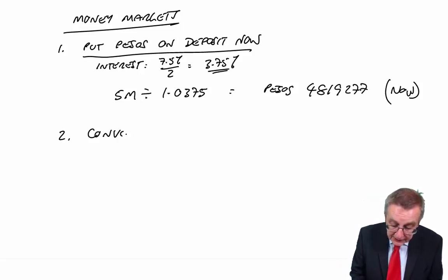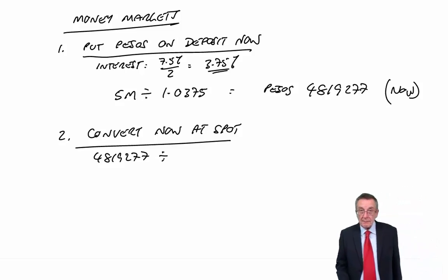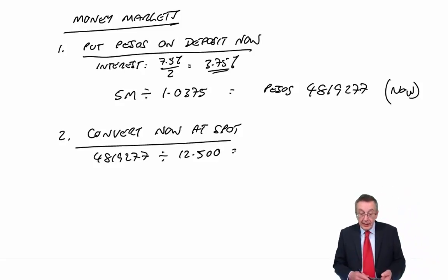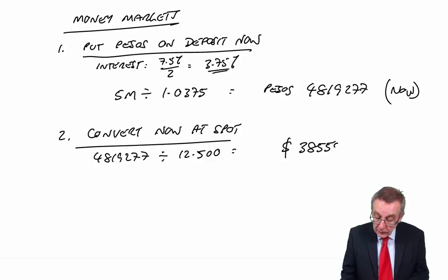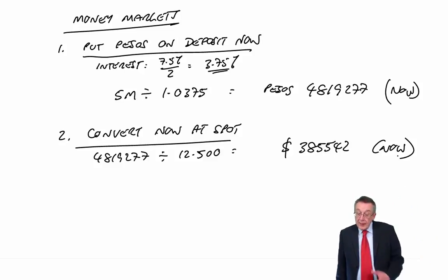How can we put that many on deposit now? We'll have to convert now at spot. We need to buy 4,819,277 pesos. If we buy those pesos now at today's spot, the same logic as before, it'll be the lower rate. As of today, we convert at 12.5. Divide by 12.5, we'll need 385,542 dollars now.